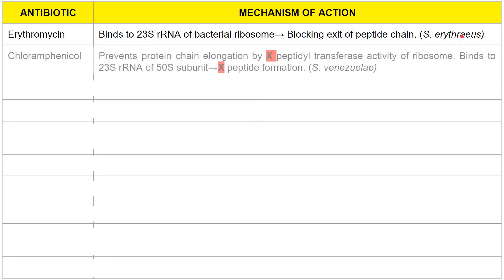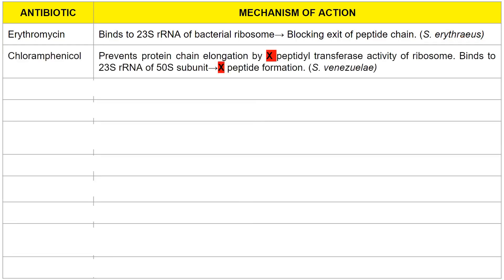Next we have chloramphenicol. Chloramphenicol acts by inhibiting protein synthesis. Specifically, it prevents elongation of the peptide by inhibiting the peptidyl transferase activity. It binds to the 23S rRNA subunit and prevents formation of the peptide bond. Chloramphenicol is isolated from Streptomyces venezuelae.